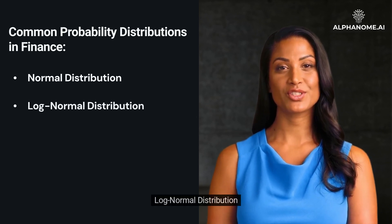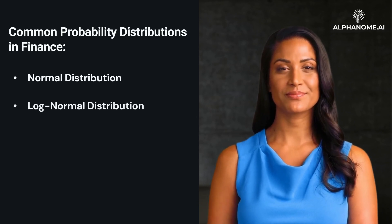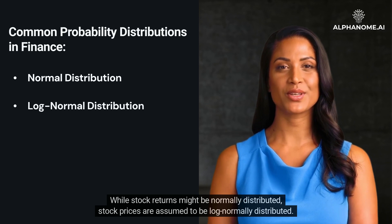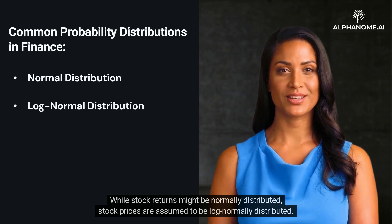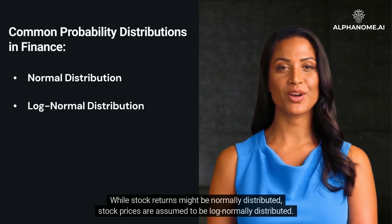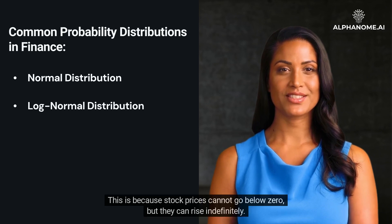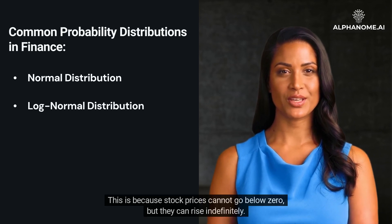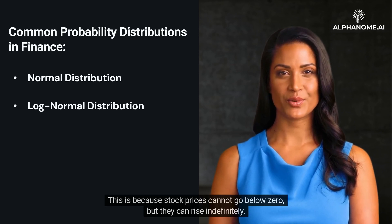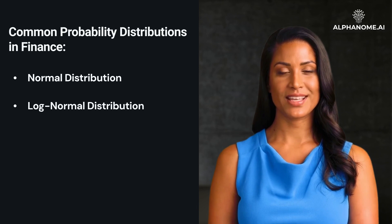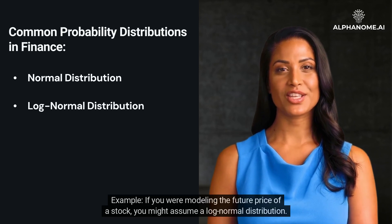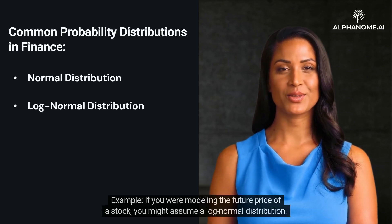Log-Normal Distribution: while stock returns might be normally distributed, stock prices are assumed to be log-normally distributed. This is because stock prices cannot go below zero, but they can rise indefinitely. For example, if you were modeling the future price of a stock, you might assume a log-normal distribution.